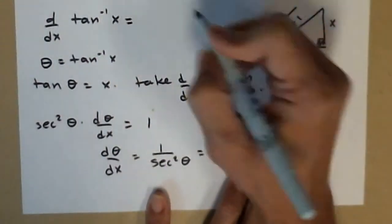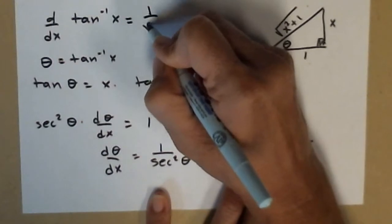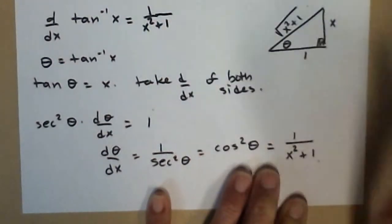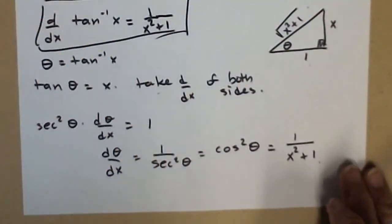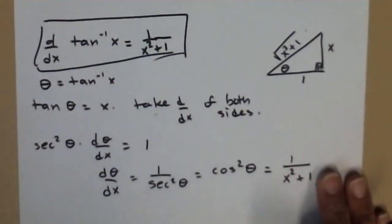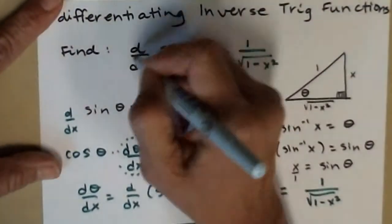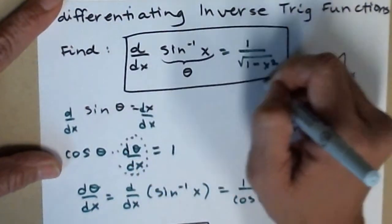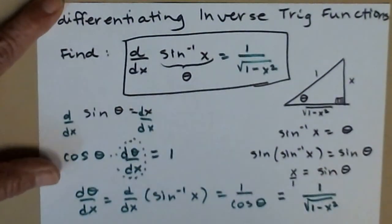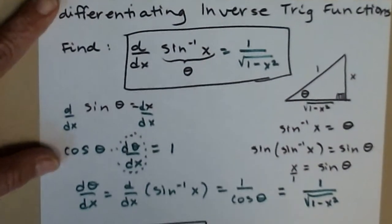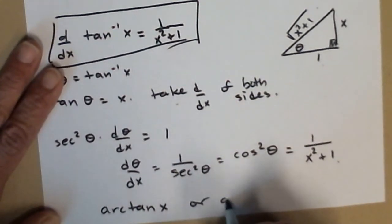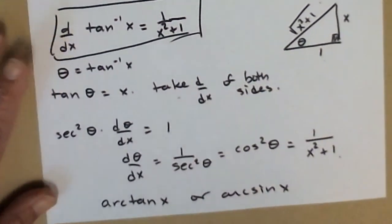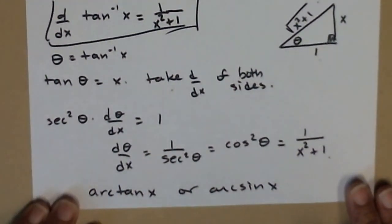So there are the derivative of two inverse trig functions. Inverse tangent, 1 over x squared plus 1. And the derivative of inverse sine, 1 over radical 1 minus x squared. And remember, the other thing, sometimes this will be written as arctan x or arcsin x. So if you see that notation, it means the same thing as inverse.